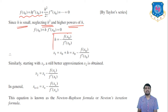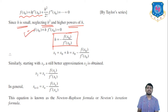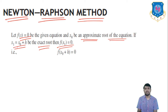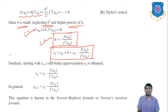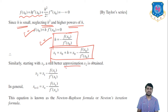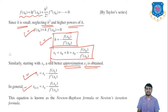From that equation, h = −f(x0) / f′(x0). Since x1 = x0 + h, we get x1 = x0 − f(x0) / f′(x0). Similarly, starting with x1 as a better approximation, x2 = x1 − f(x1) / f′(x1). In general: x(n+1) = x(n) − f(x(n)) / f′(x(n)). This equation is known as the Newton-Raphson formula or Newton iteration formula.